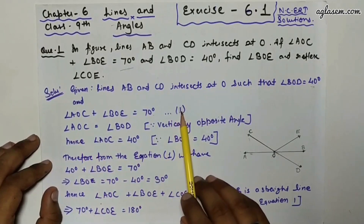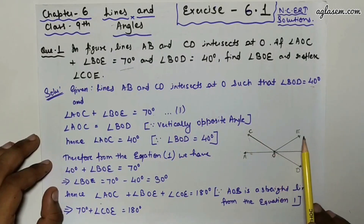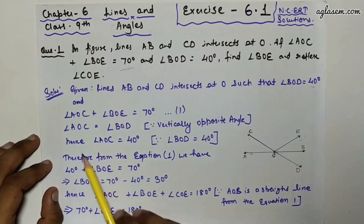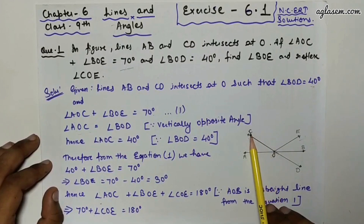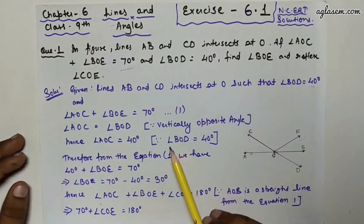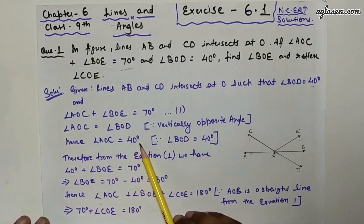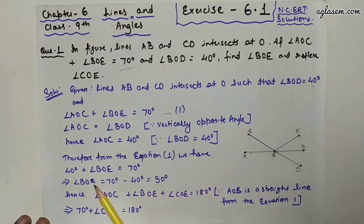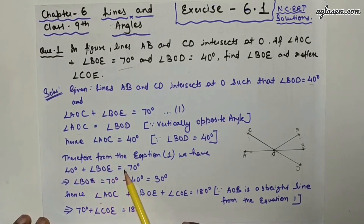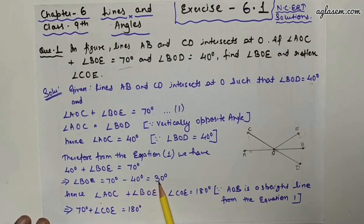Since angle AOC equals angle BOD (vertically opposite angles), angle AOC = 40°. Therefore angle BOE = 70° − 40° = 30°.